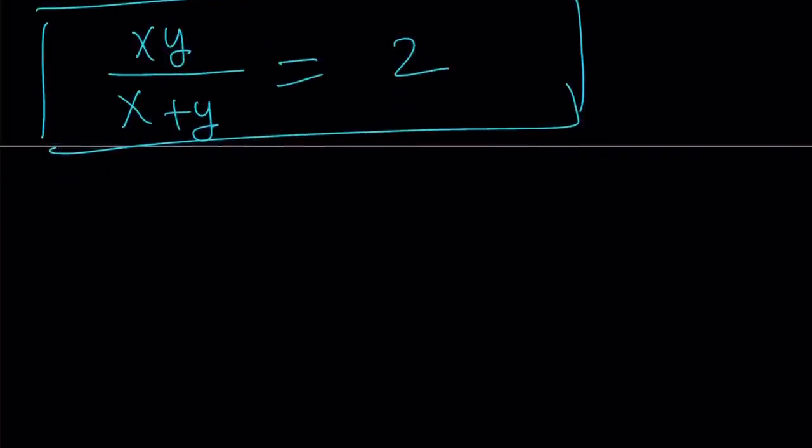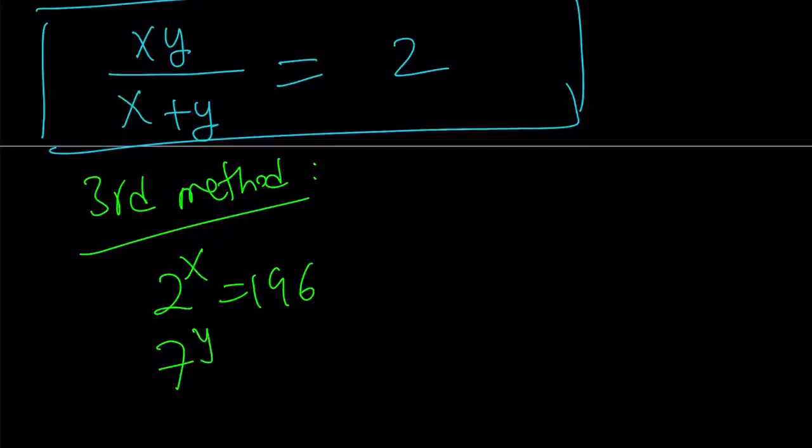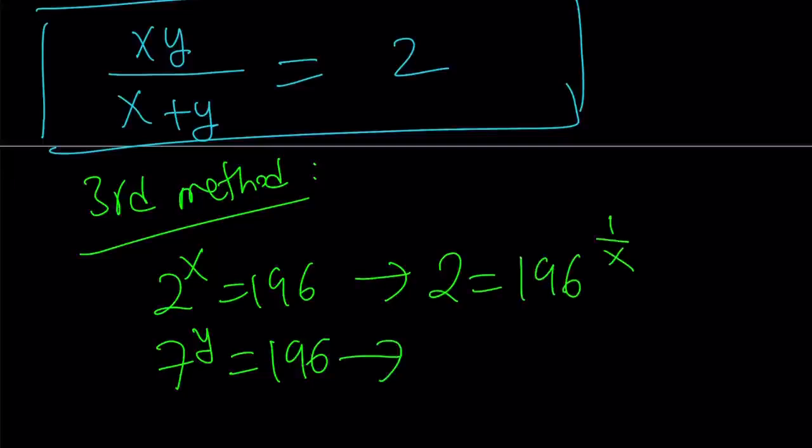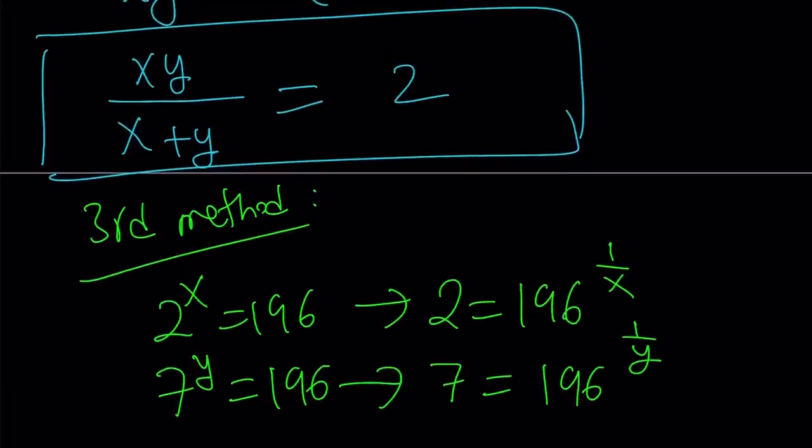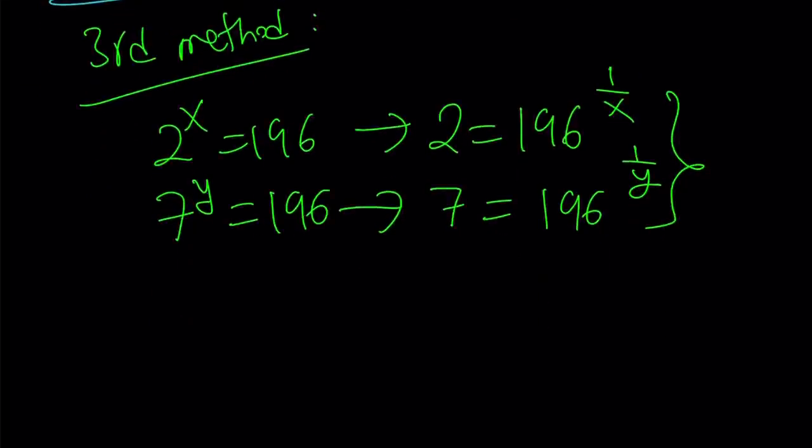That brings us to the end of the second method, and to the beginning of the third method. The third method is going to use an amazing approach, a very direct approach. So, let's take a look. From here, I can do the following. Raise both sides to the power of 1 over x. 2 becomes 196 to the power of 1 over x. And the second one, same thing, raise both sides to the power of 1 over y. You get 7 equals 196 to the power of 1 over y. Now, why did I do this? Because I'm looking for xy over x plus y, and I can get that by adding 1 over x plus 1 over y. So, this is kind of like a system. Let's go ahead and multiply these two equations.